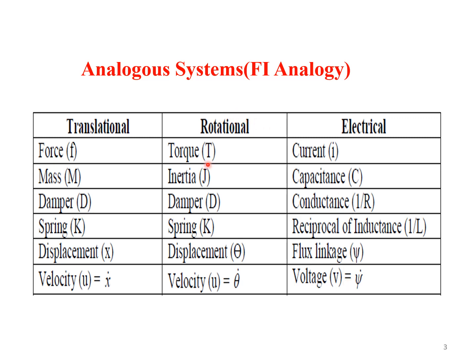With respect to the rotational system, torque is considered as equivalent to current. Inertia J is considered as equivalent to capacitance. Damper D is considered as equivalent to conductance. Spring coefficient K is considered as equivalent to the reciprocal of inductance. Angular displacement theta is taken as flux, and angular velocity is considered to be equivalent to voltage. This consolidated table shows the relationship between translational, rotational and electrical systems using FI analogy, and is useful to solve many problems.